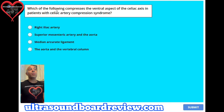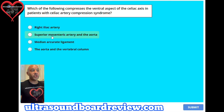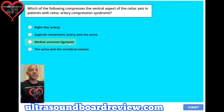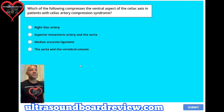Question 15. Which of the following compresses the ventral aspect of the celiac axis in patients with celiac artery compression syndrome? A. Right iliac artery, B. Superior mesenteric artery and the aorta, C. Median arcuate ligament, or D. The aorta and the vertebral column. The answer is C, median arcuate ligament.